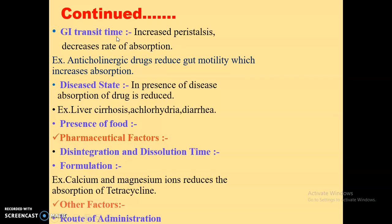GI transit time: absorption of a drug from the gastrointestinal tract may be effectively decreased by increased peristalsis activity. Increased peristalsis increases motility, and hence the drug does not get proper time to reside within the intestine, so the rate of absorption is reduced. On the other hand, anti-cholinergic drugs decrease peristalsis, reduce gut motility, and hence increase absorption.